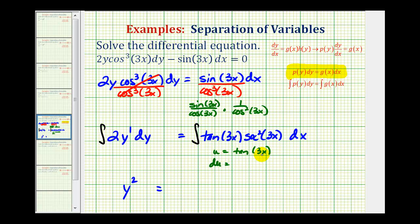The derivative of tangent 3x is going to be equal to secant squared 3x, which is good news. But now we also have to multiply by the derivative of the inner function. The derivative of 3x would be 3, and then we have dx.